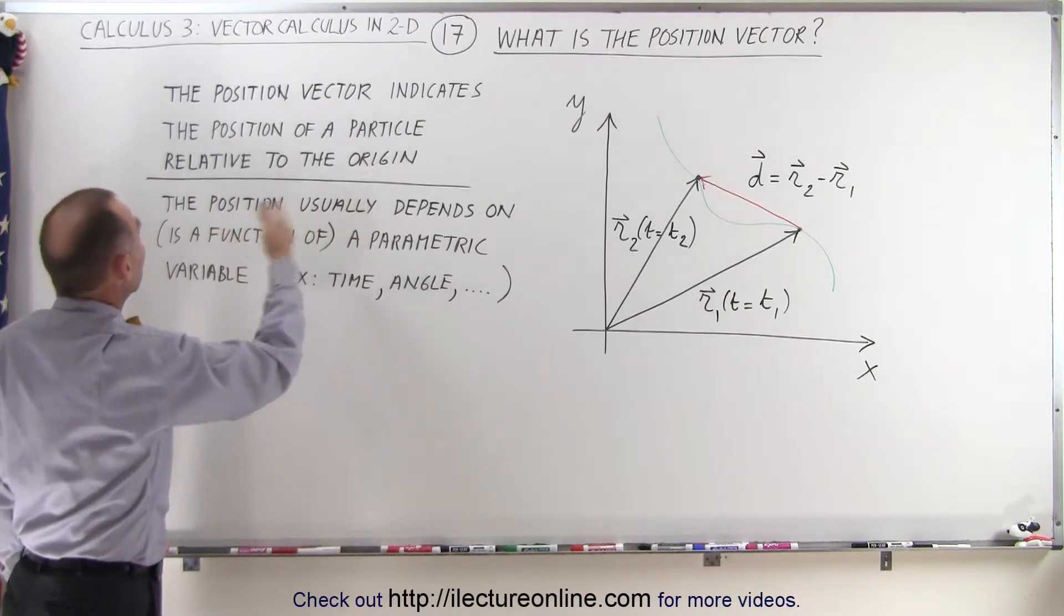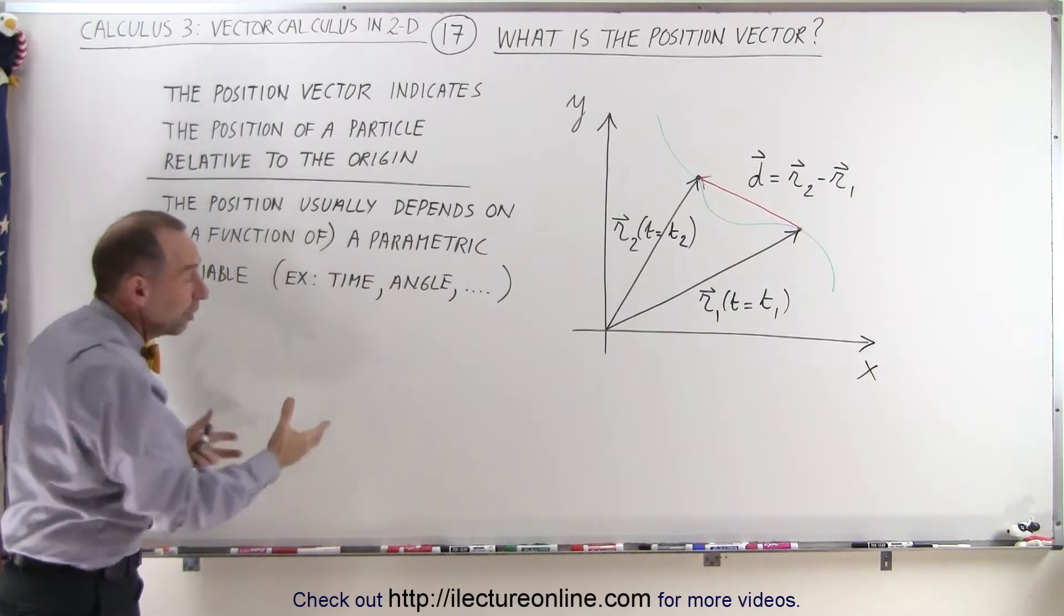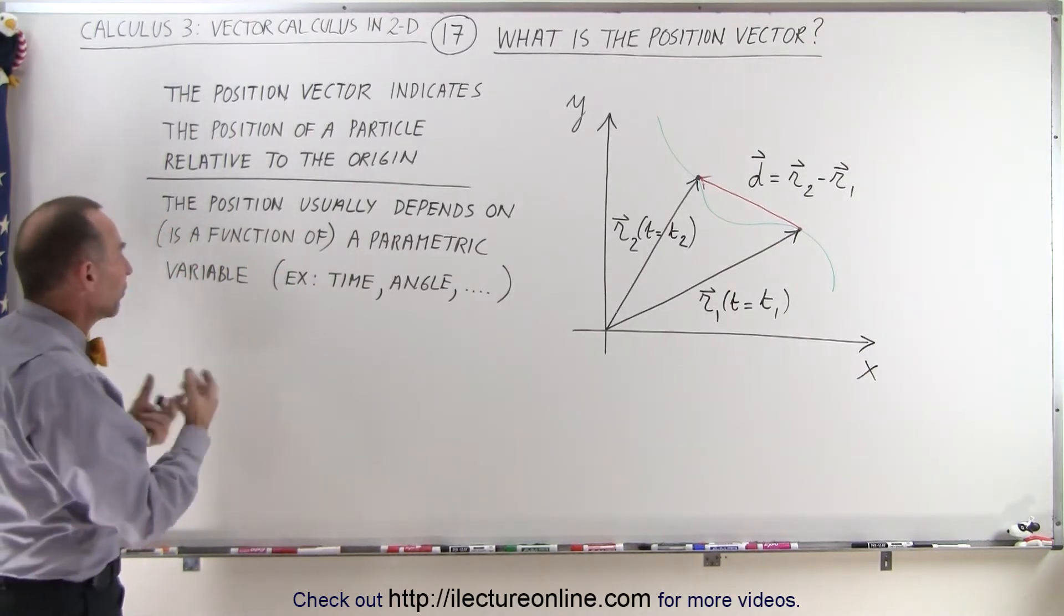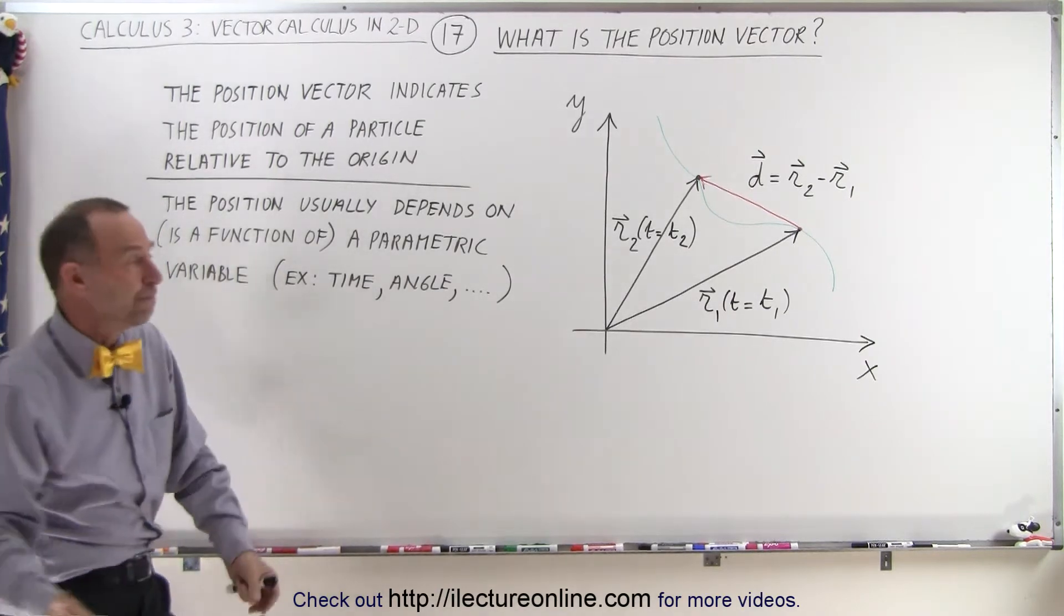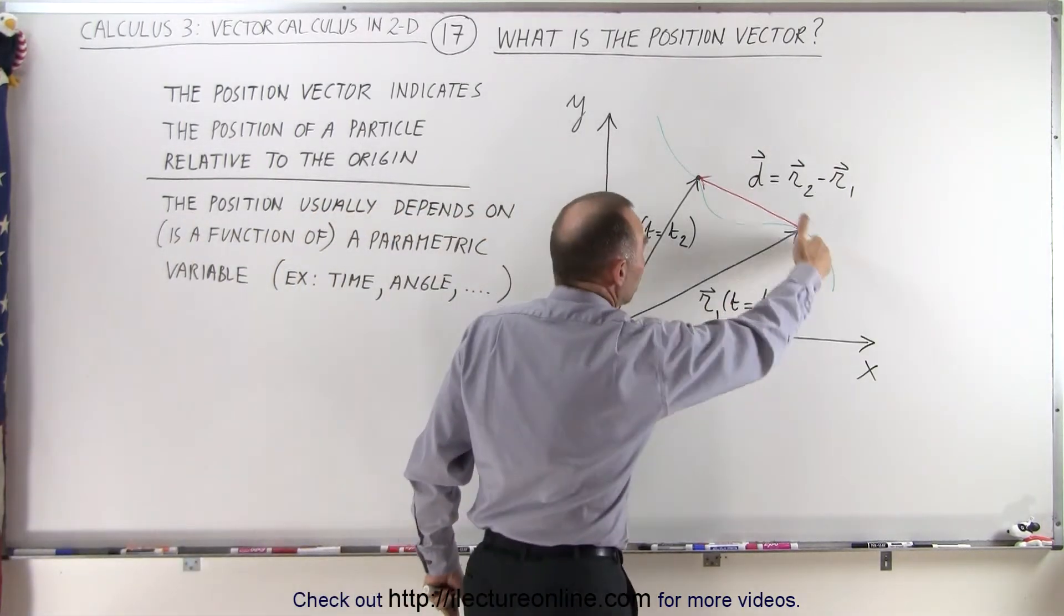The position usually depends on or is a function of some parametric variable. That variable could be time or angle or anything else. So let's say this is time, and the particle is moving along this path.